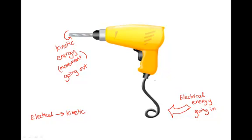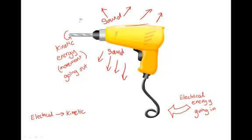Now as well as the electrical energy getting converted to kinetic energy, the electrical energy is also transformed to other things. For example, sound. The drill makes a lot of sound. So some of that electrical energy is converted or transformed to sound.